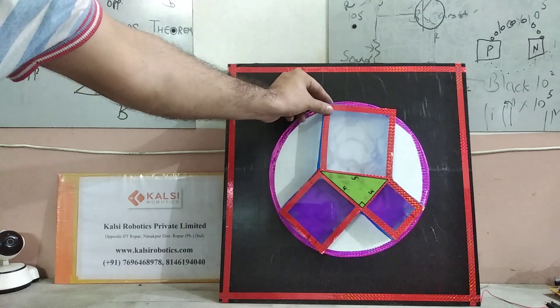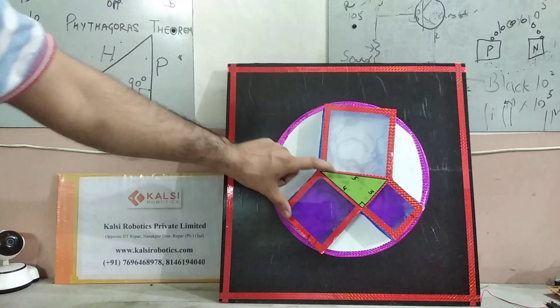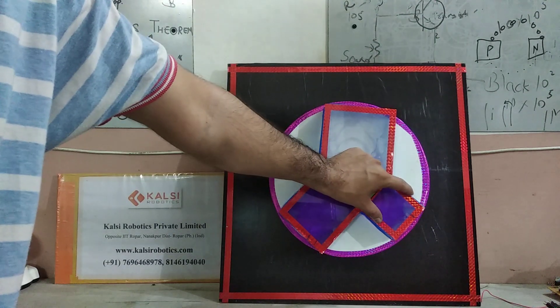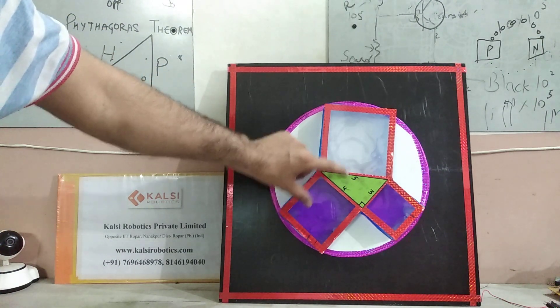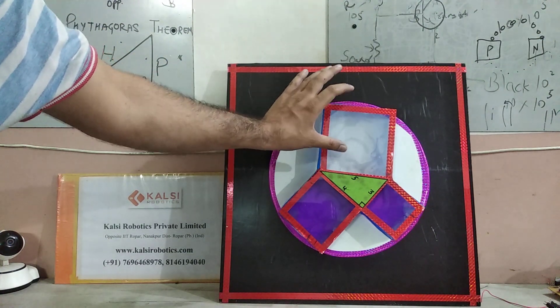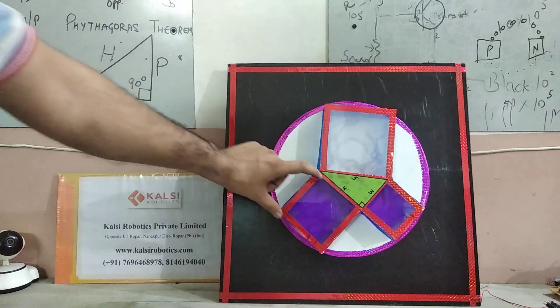According to the Pythagoras theorem, these both containers have equal volume which is equal to this bigger one here.